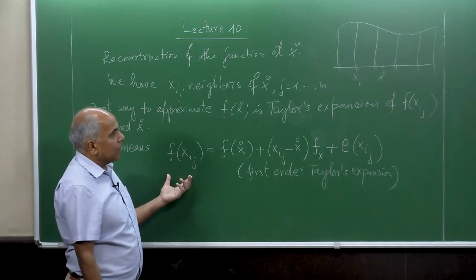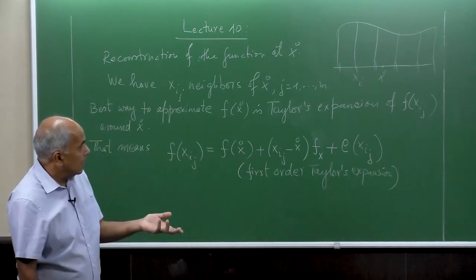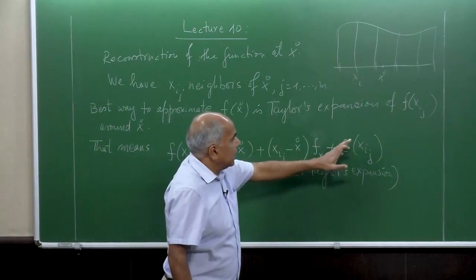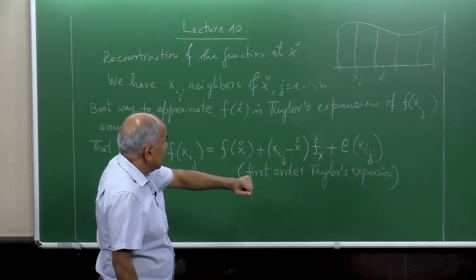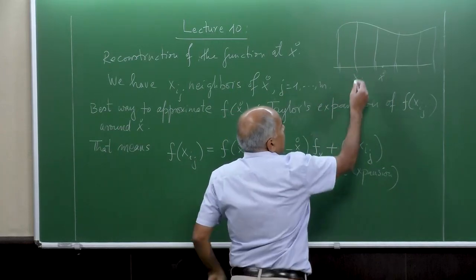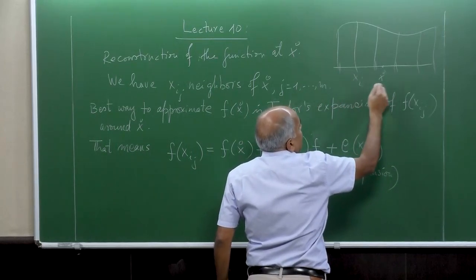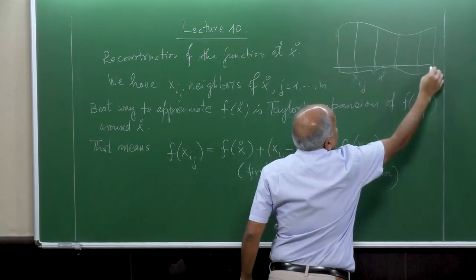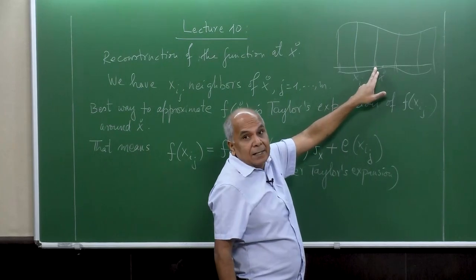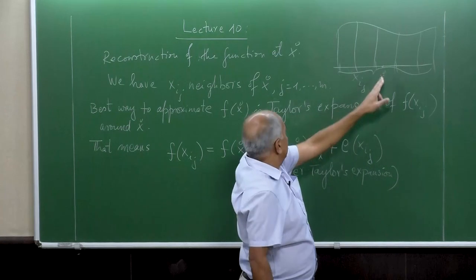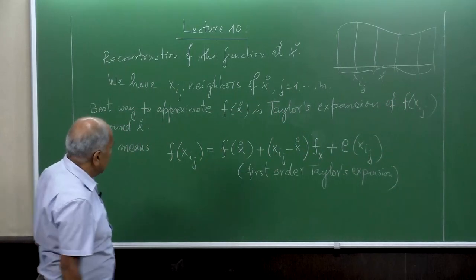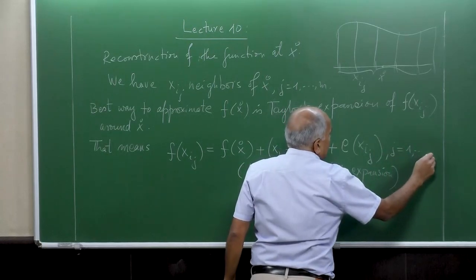As we have seen before when we derived our finite difference scheme, we had delta x times fx and half delta x squared times fxx. But now since we don't have equal distance here, what we have is x_ij. These are the neighbors — they are any x_i, some neighbors x_ij. We don't have equal distance because from this point to this is not delta x; it is just x_ij minus x0. So we have different neighbors and j is ranging from 1 to m.